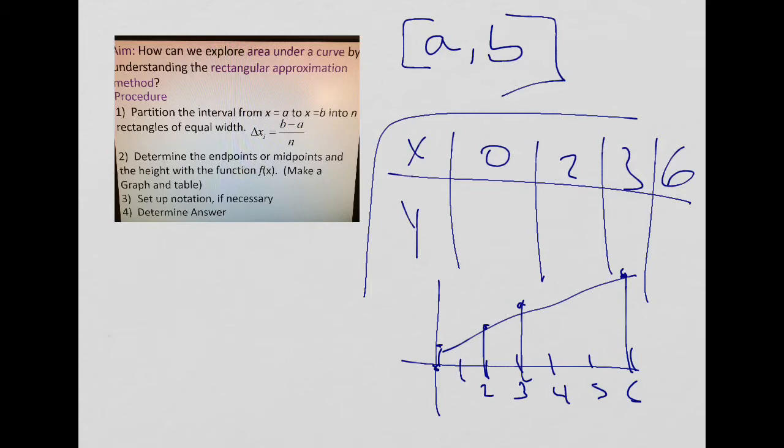So if we're setting up the size of the rectangle, you see how it applies to form a rectangle. I didn't decide LRAM or RRAM or MRAM yet. That determines the height, and that brings us to number two. Two says determine the endpoints or midpoints and the height with the function f of x. I'm going to make a table and a graph. So usually you stick with one method. You're not going to have multiple different methods within an interval in one problem.